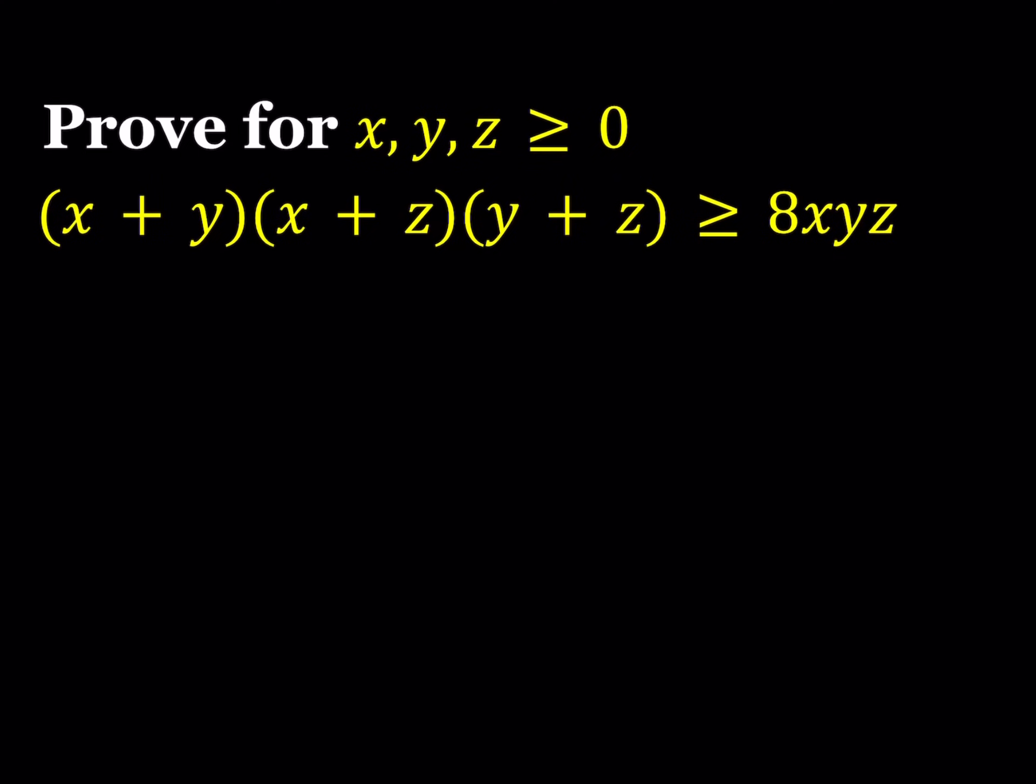So we can just go ahead and distribute the left hand side to see what's happening. This should give us x squared y plus xy squared plus x squared z plus xz squared when we multiply the whole thing, and then y squared z plus yz squared.